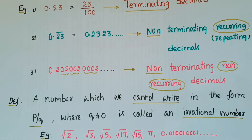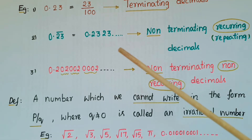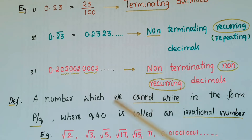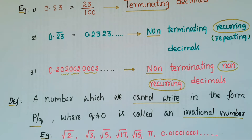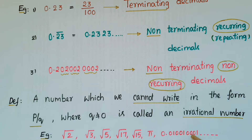An irrational number cannot be written in the form p by q, where q is not equal to 0. Some examples of irrational numbers are: root 2, root 3, root 5, root 17, root 15, pi, 0.01001001001 and so on.